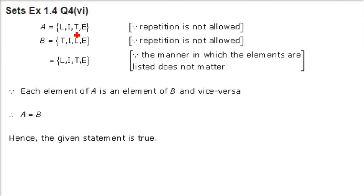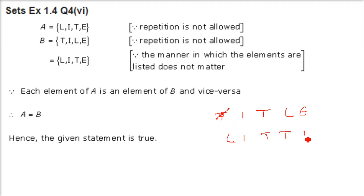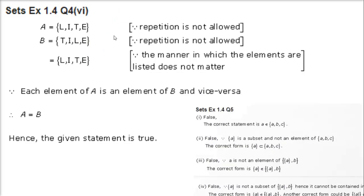Next: set A = {x : x is a letter of the word 'little'} and set B = {x : x is a letter of the word 'title'}. Writing out the unique letters: 'title' gives {t, i, l, e} and 'little' gives {l, i, t, e}. They have the same elements t, i, l, e. Both sets are equal.